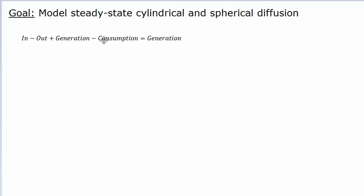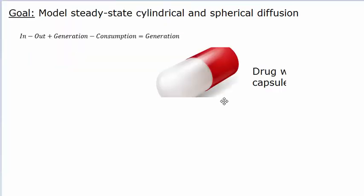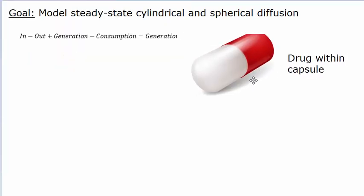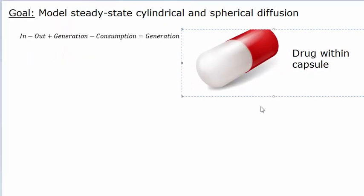The old way is to use your generalized mass balance. We need some context for this problem. Assume you have a drug that is present within a capsule, and that drug is going to be diffusing out through this capsule wall into your bloodstream, or something similar like that.